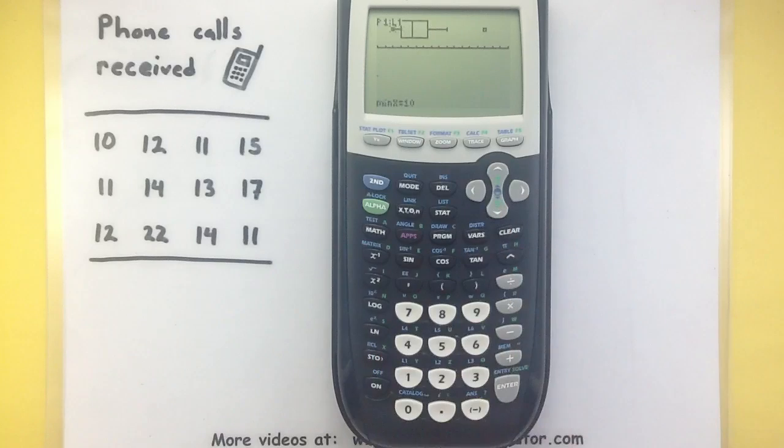So as long as you set all of your options correctly in your calculator, you can quickly have it build a box and whisker plot for you.